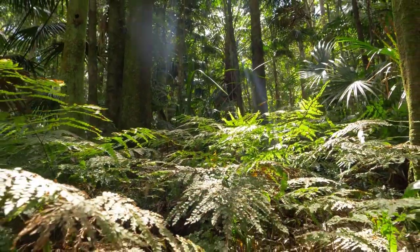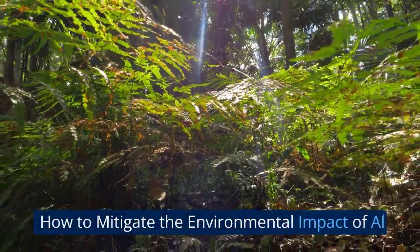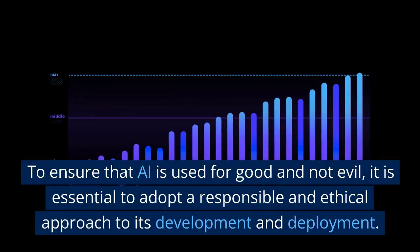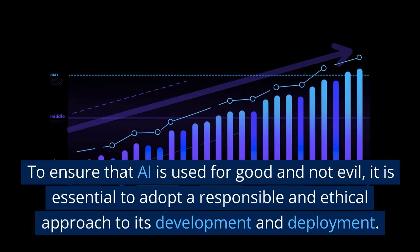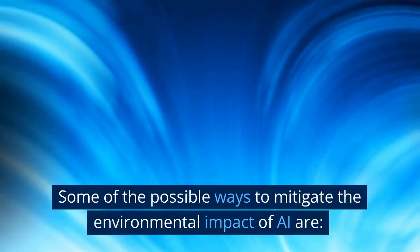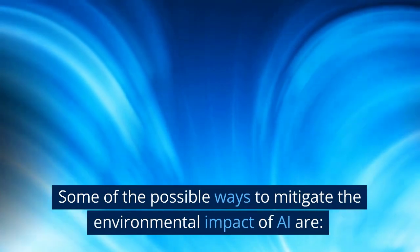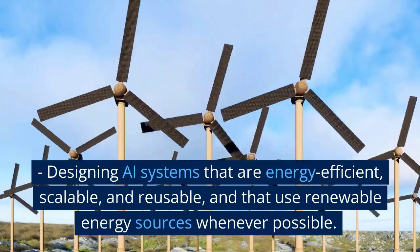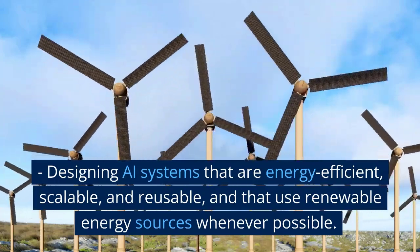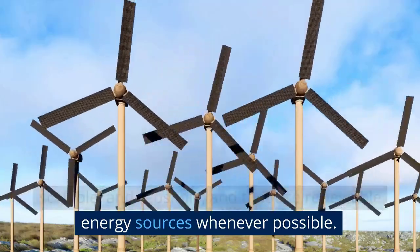How to Mitigate the Environmental Impact of AI. To ensure that AI is used for good and not evil, it is essential to adopt a responsible and ethical approach to its development and deployment. Some possible ways include designing AI systems that are energy efficient, scalable, and reusable, and that use renewable energy sources whenever possible.